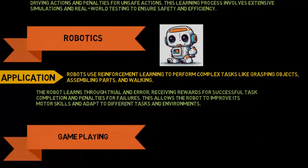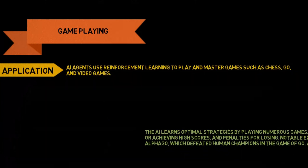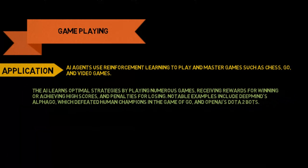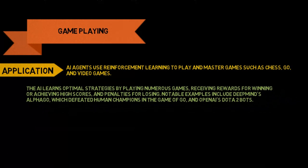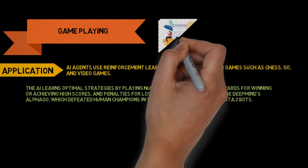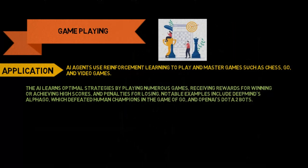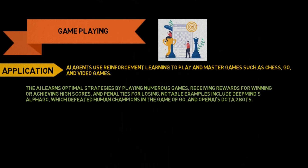AI agents use reinforcement learning to play and master games such as chess, Go, and video games. The AI learns optimal strategies by playing numerous games, receiving rewards for winning or achieving high scores, and penalties for losing. Notable examples include DeepMind's AlphaGo, which defeated human champions in the game of Go, and OpenAI's Dota 2 bots.